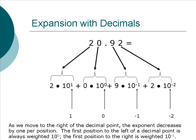We can expand decimal numbers too. For example, say we want to expand 20.92. This is 2 times 10 to the 1 plus 0 times 10 to the 0 plus 9 times 10 to the minus 1 plus 2 times 10 to the minus 2. What this means is 2 tens, 0 ones, 9 one-tenths, and 2 one-hundredths. Notice that the digit immediately to the right of the decimal point has an exponent of minus 1.